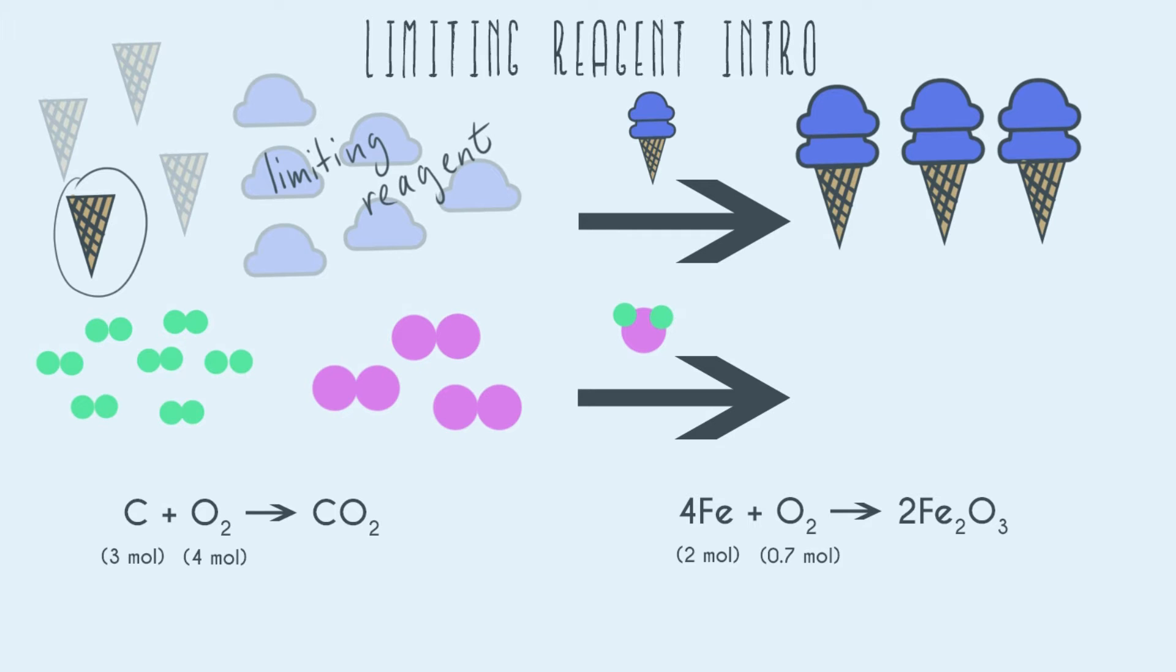And the one that we have extra of, or in chemistry we're going to be saying excess of, was the ice cream cones. So the ice cream cones in this example are our excess reagent. So that's pretty much the entire concept.